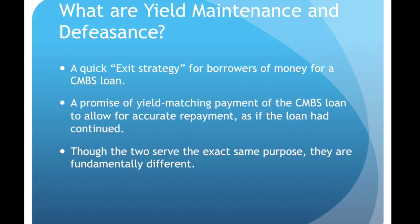Traditionally, they're viewed as a quick exit strategy for borrowers of money for a commercial mortgage-backed securities loan. Essentially, it's a promise of yield-matching payment of that loan to allow repayment to the lender to be the same as what they expected before — as if the loan had continued the same way. They are fundamentally completely different, but they serve the exact same purpose to the lender: 'I want my money on the schedule I was promised at the original origination of the loan.'